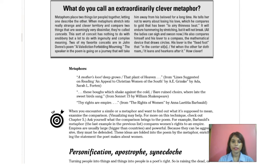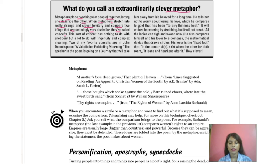Now let's look in more detail at the metaphor. Metaphors place two things or people together, letting one describe the other — one thing describes the other with the help of a metaphor. When metaphors stretch into really strange and clever territory and compare two things that are seemingly very dissimilar, they are called conceits. This sort of conceit has nothing to do with snobbery but a lot to do with ingenuity and complex meaning.